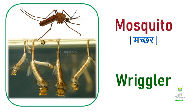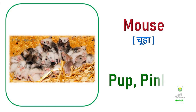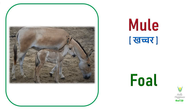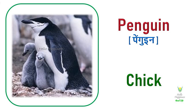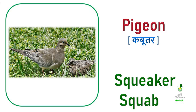Mosquito. Mosquito's young one is called a Wriggler. Mouse. Mouse's young one is called a Pup or Pinkies. Mule. Mule's young one is called a Foal. Penguin. Penguin's young one is called a Chick.